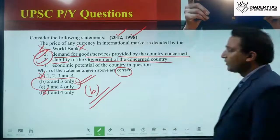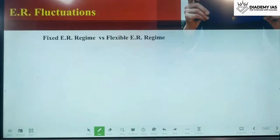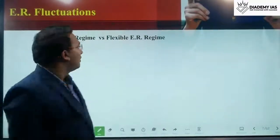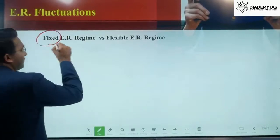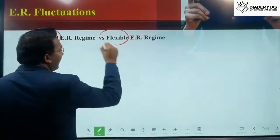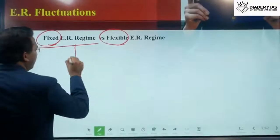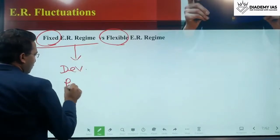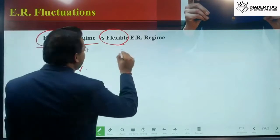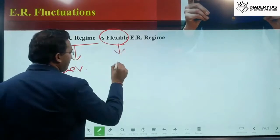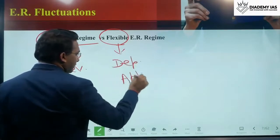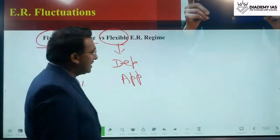Exchange rate fluctuations occur under either a fixed exchange rate regime or a flexible exchange rate regime. In a fixed exchange rate regime there can be devaluation or revaluation, while in a flexible exchange rate regime there can be depreciation or appreciation. We will now discuss each one of them.